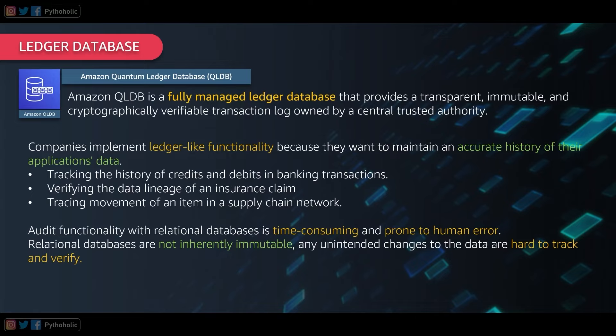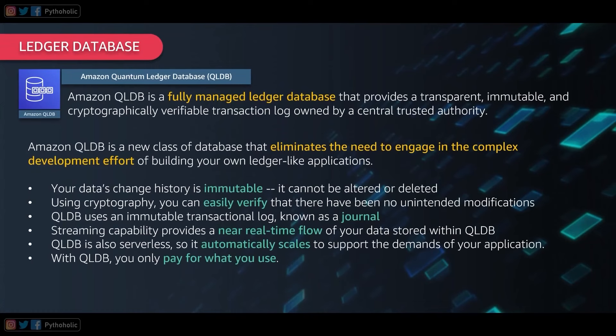There might be a counter argument for using relational databases, but data is way easier to manipulate and prone to human errors in relational databases. If someone pushes an incorrect transaction, there is a provision to roll back, but in a huge transactional scenario that could lead to untraceable errors. Relational databases are not inherently immutable and any unintended changes to the data are hard to track and verify. Blockchains can be used as ledgers too, but they are costly and complex to set up.